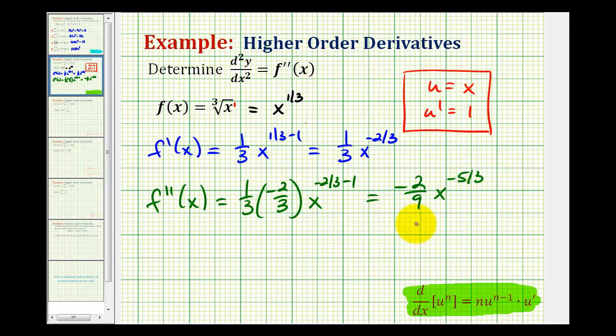Now we don't want to leave the function in this form mainly because it has a negative exponent. So let's rewrite this using a positive exponent. Remember you can think of this as being over one. So we move this to the denominator, the power is going to change to positive five thirds.